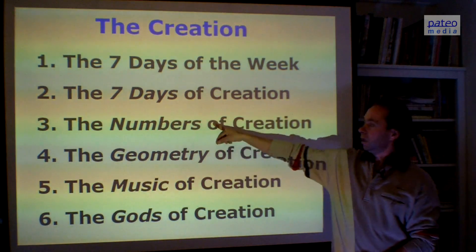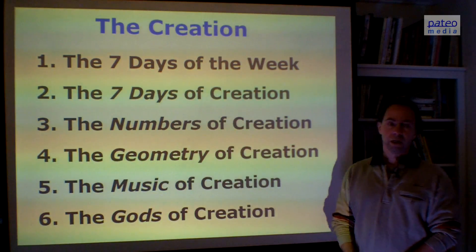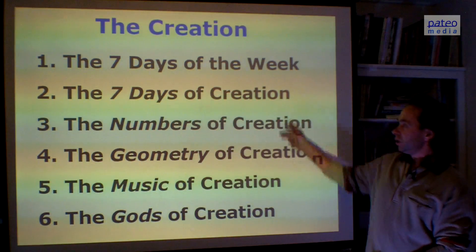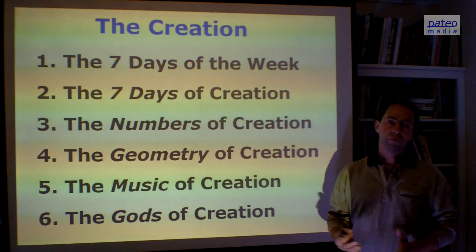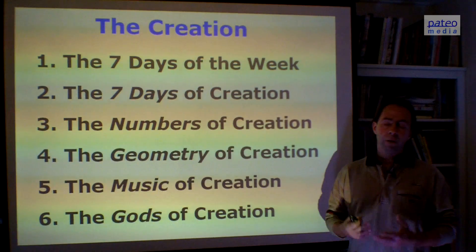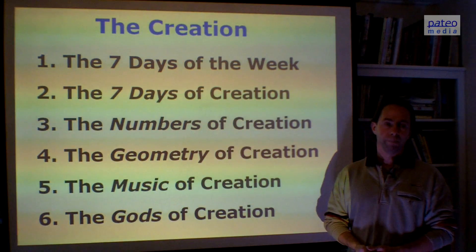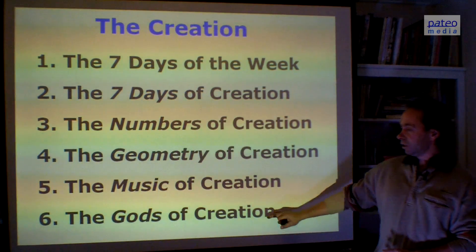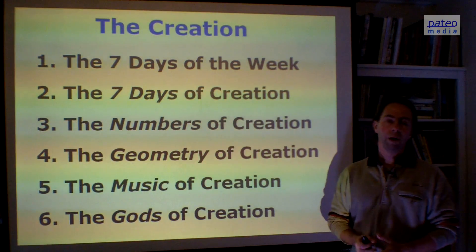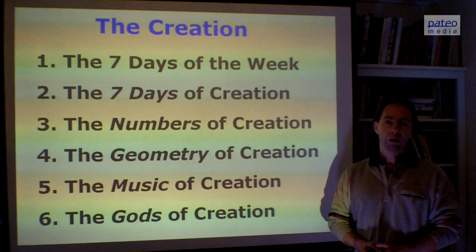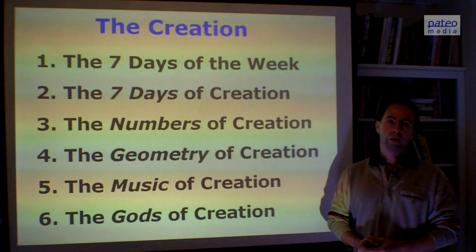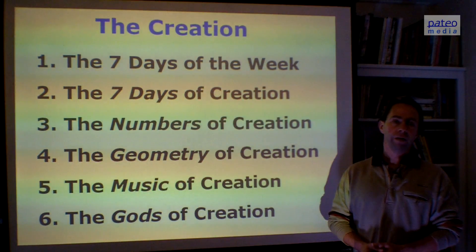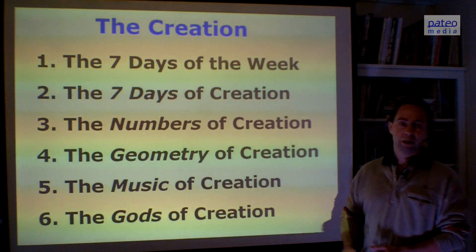Then I will show the three pillars — numbers, geometry, and music — in relation to the creation, because we can find the essence of creation from three different perspectives. But I will show that they are in fact all the same. I will end this series of lectures with talking about God. There is one God at the top, but there are several Gods below that, so it is a hierarchy of Gods. That will be presented in the sixth part.